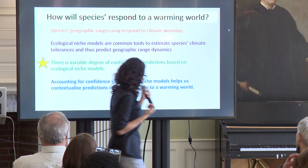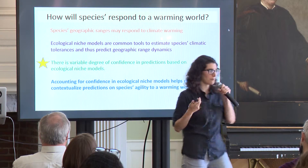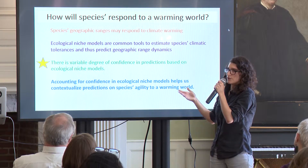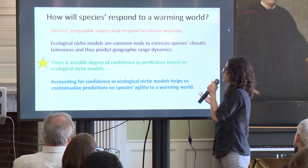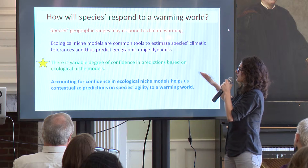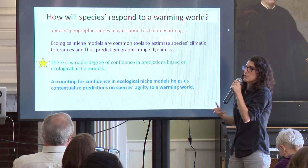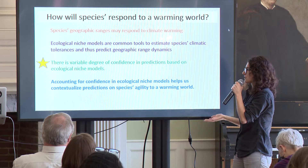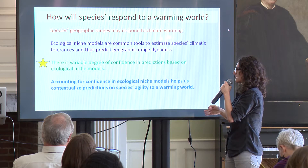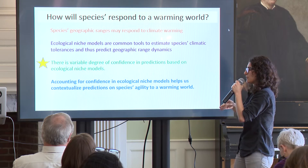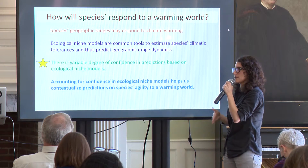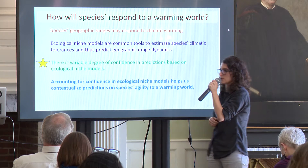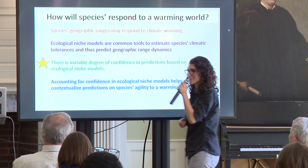Just to conclude: if you want to know how species respond to climate, we have niche models that can help us answer this question, but we need to take into consideration our degree of confidence in making those predictions. We argue that accounting for confidence is going to help us contextualize our predictions and better predict species' ability to respond to a warming world. Thank you.